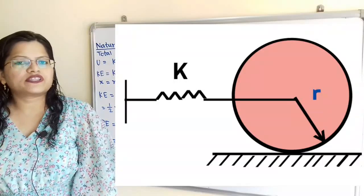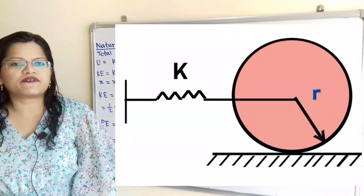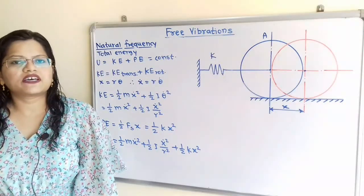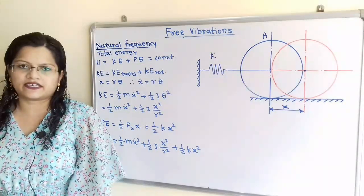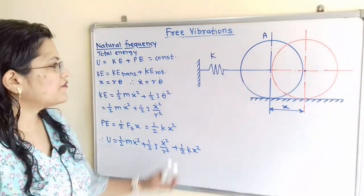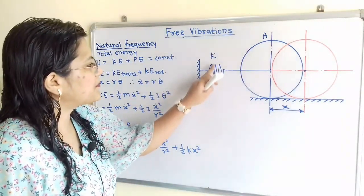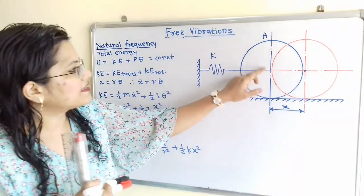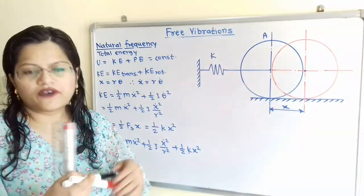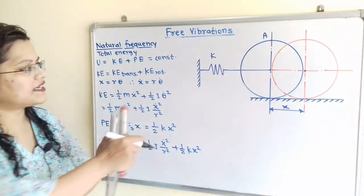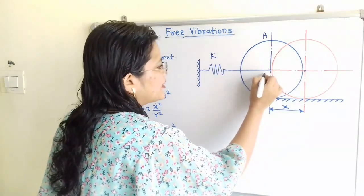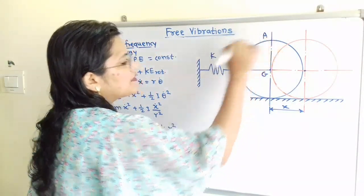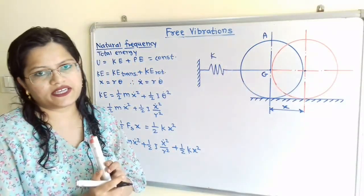We will first draw the free body diagram for the given system when it is rolling on this fixed surface through a distance X. Here is the spring with stiffness K connected at the center of this disk. We will consider two points: the center point G, and the point on the circumference, which we will consider as point A.